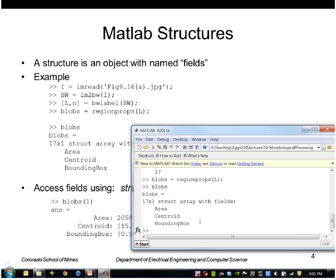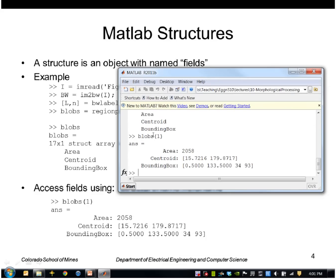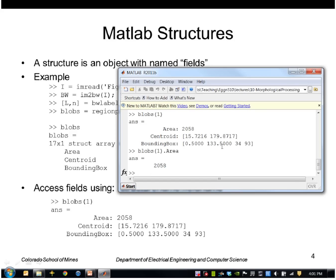If I want to look at the first structure in that list I type blobs of one and it shows me the values of the fields. I can also access any of these fields by typing period and then the field name like that.